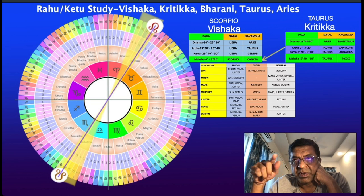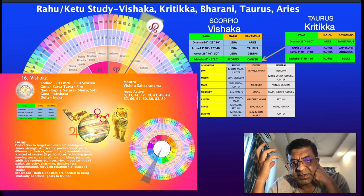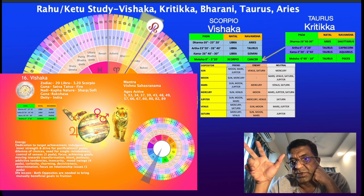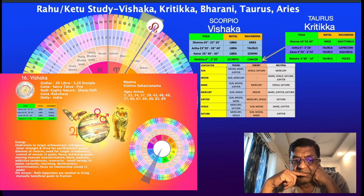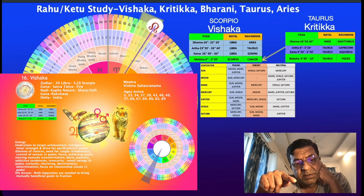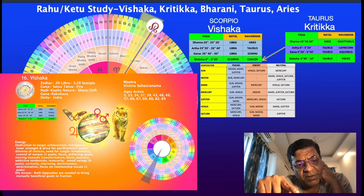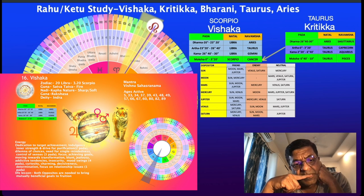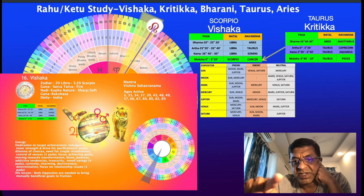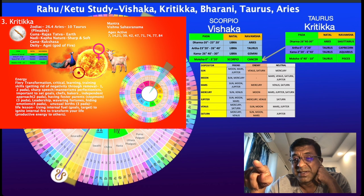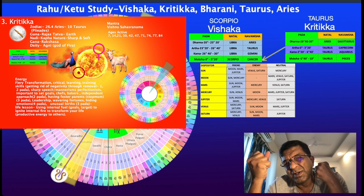In the Navamsa, we are talking about the Cancer-Capricorn axis — the puzzle between mind and heart. Capricorn is the mind, Cancer is the heart, representing mother and father, the two solstice points. In the first pada, Rahu is still in the first pada of Scorpio — Anuradha — moving into Cancer in Navamsa, with Ketu in Aries going into Sagittarius. So on the Rahu side we have two water signs, and on the Ketu side two fire signs.